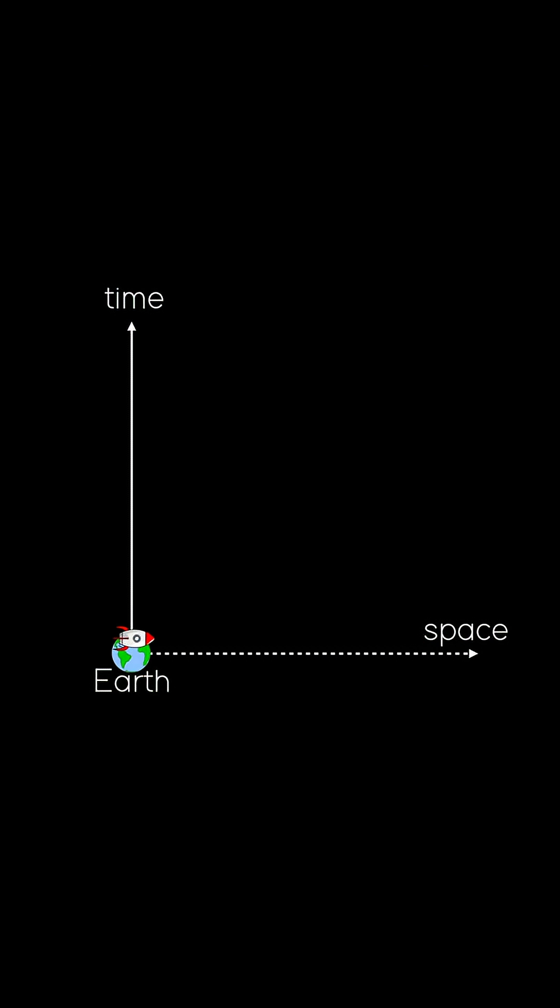To make it more interesting, let's add a spaceship moving away from the Earth at 10% the speed of light, c. From Earth's perspective, the ship moves both through space and time like this.